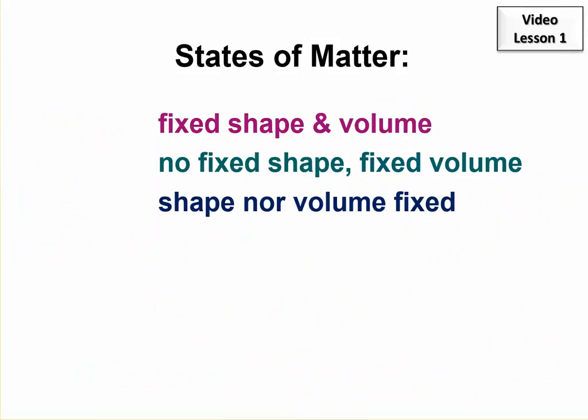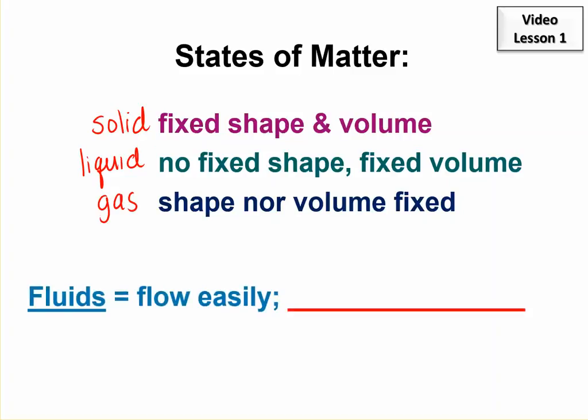See what you remember about these. One is solid, one is gas, and one is liquid. So fixed shape and volume—that's solid. No fixed shape but a fixed volume—that's a liquid. And where neither shape nor volume is fixed—that's a gas. So we should know that.